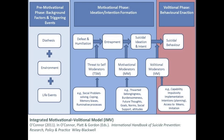The second portion of the model — the middle portion — is what we describe as the motivational phase, and that draws directly from the theory of planned behaviour. It describes the factors that we think are associated with the development of your intention to engage in suicidal behaviour. So it's looking at what are the factors which make somebody suicidal, and what are the factors which lead to suicidality in some people and not in others.